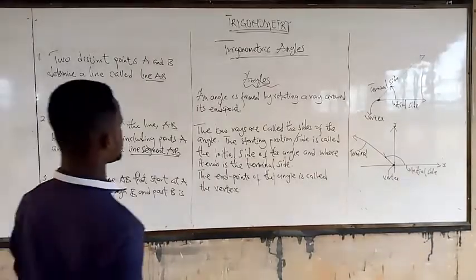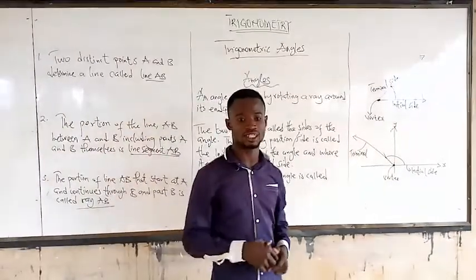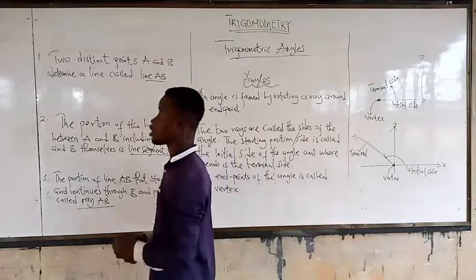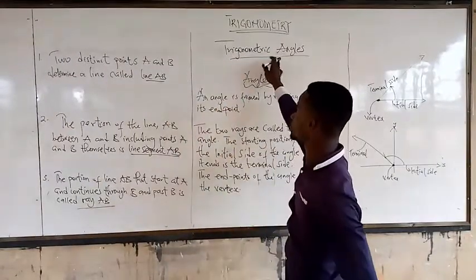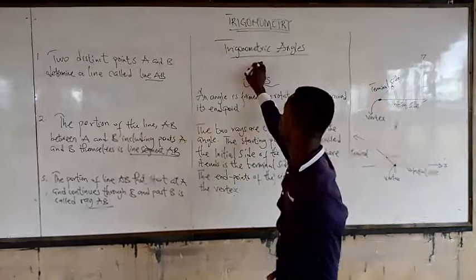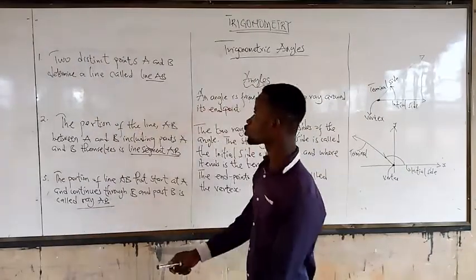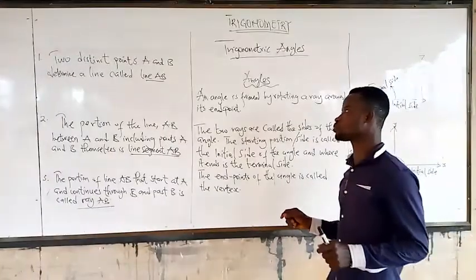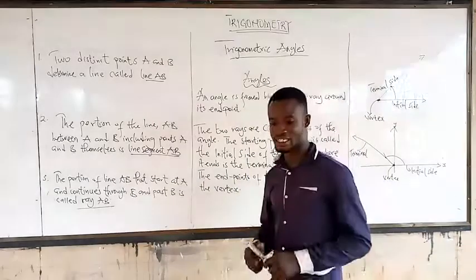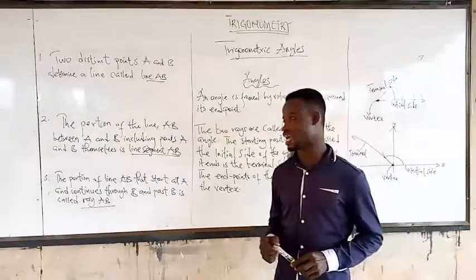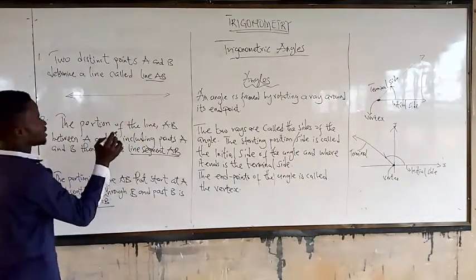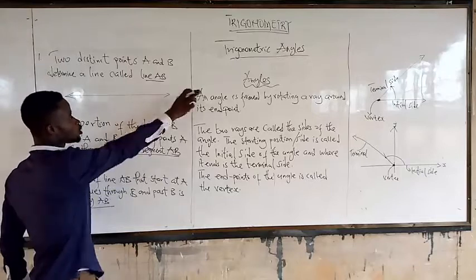Let's first look at trigonometric world angles and give meaning to some terms. The first thing we are looking at is: two distinct points, A and B, determine a line called line AB. So we are saying that two points determine a line. This line goes to infinity in both directions.